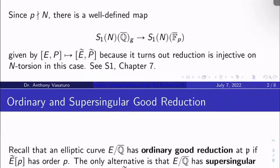And this works because it turns out reduction is injective on N-torsion in the case p doesn't divide N.